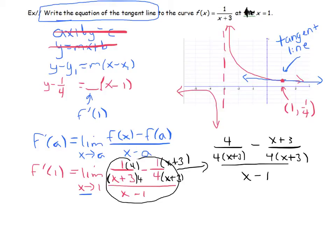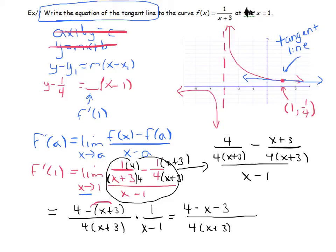So my numerator now becomes 4 over 4 times x plus 3 minus x plus 3 over 4 times x plus 3. And now I can combine the fractions in the numerator. That's equal to 4 minus, be very careful when you do this because that x plus 3 is a quantity that needs to be expressed in parentheses, divided by 4 times x plus 3. And now what I'm going to do is dividing by x minus 1 is the same as multiplying times 1 over x minus 1. I'm going to write it like that. It might be a little more useful.